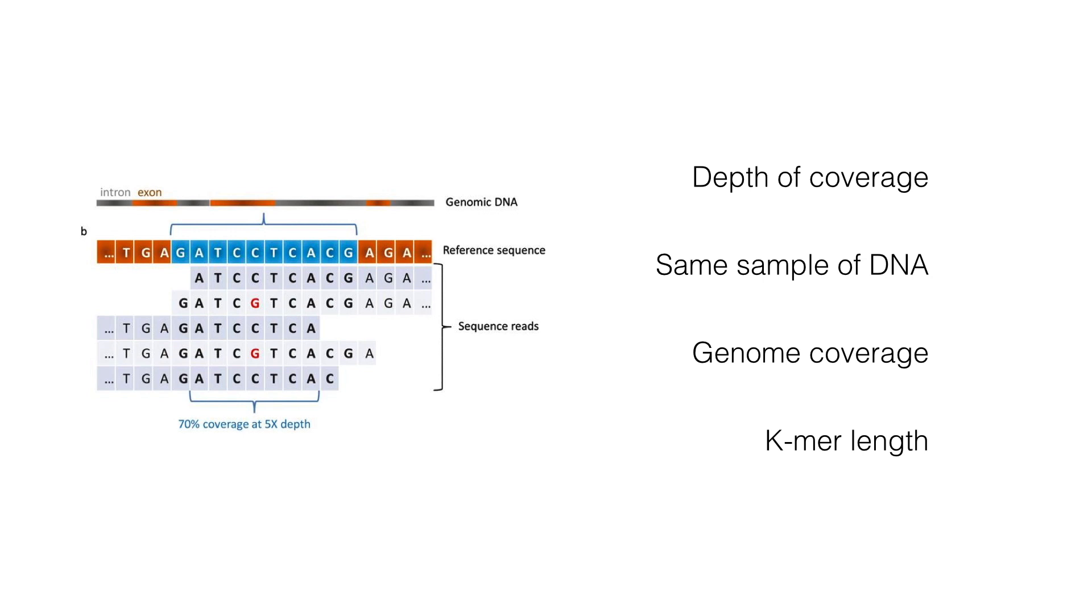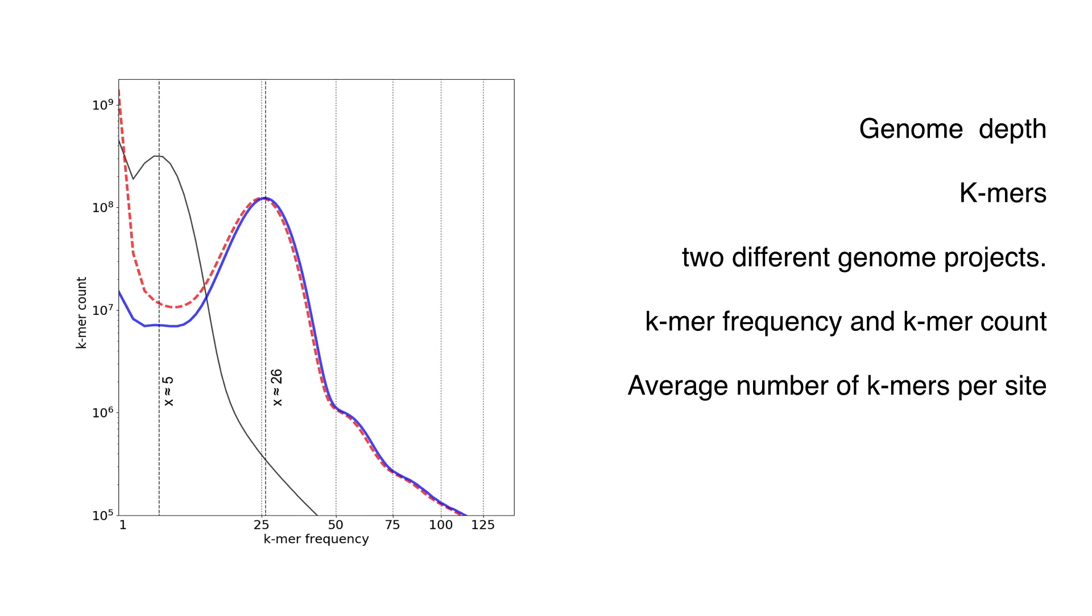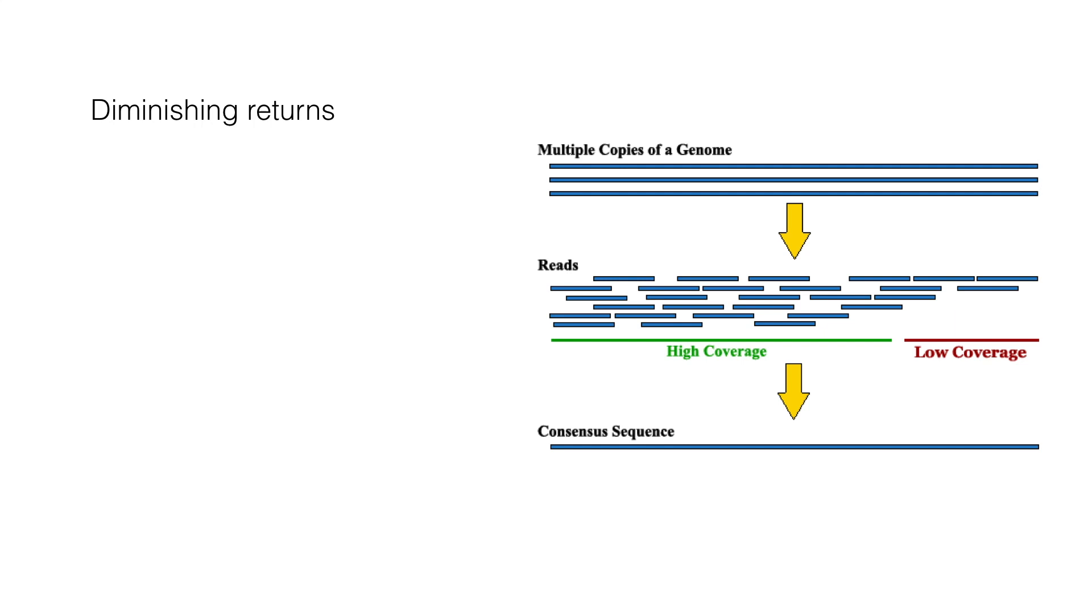There is also a way of computing the genome coverage from the distribution of K-mer length. Genome depth can be estimated from the distribution of K-mers. The graph on the left shows two different genome projects. The curves represent relationships between K-mer frequency and K-mer count. The highest peak of the K-mer frequency represents the average number of K-mers per site. The graph shows two genome projects, one has a peak indicated coverage of 5 and the other with coverage of 26.